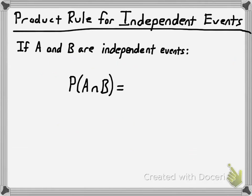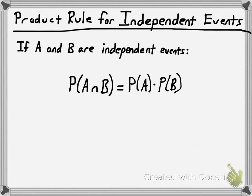Mathematically, there's the product rule for independent events. If A and B are independent events, then the probability that both events occur — the probability of the intersection of A and B — is equal to the product of the probabilities of A and B: P(A and B) = P(A) × P(B). That only works when two events are independent. For dependent events you'd need conditional probability, but this is the equation we're working with in this video.